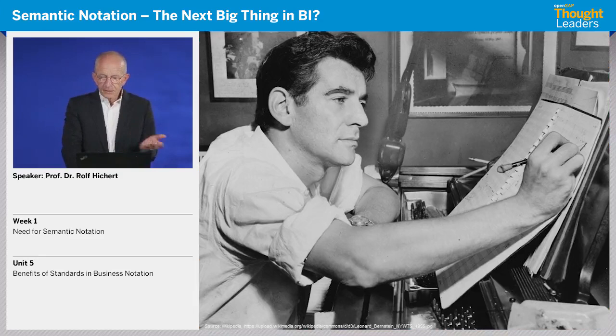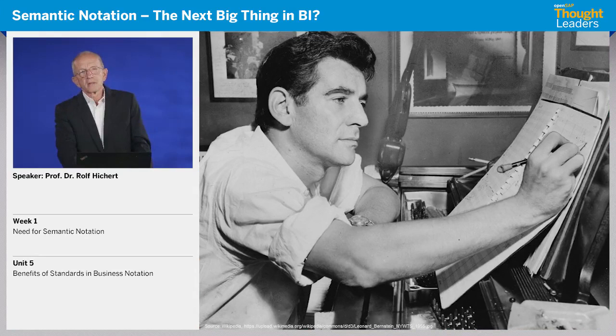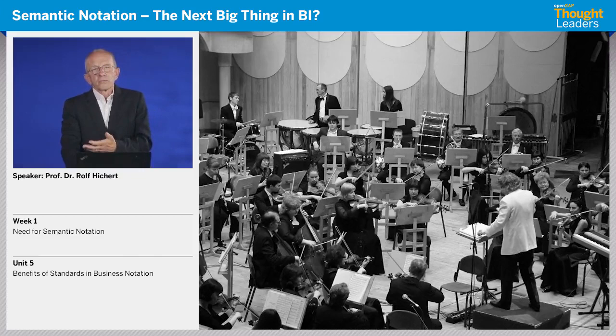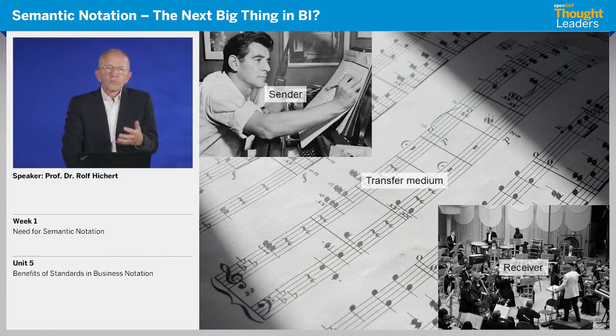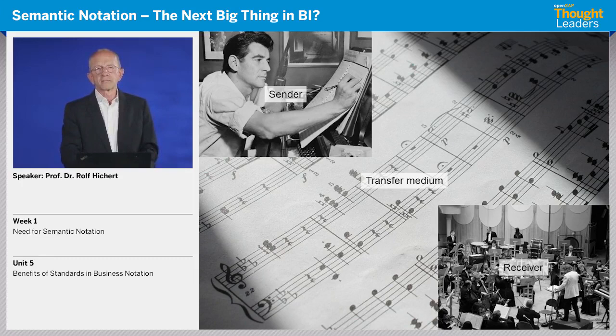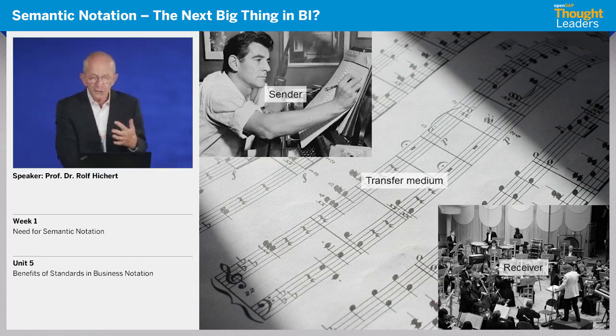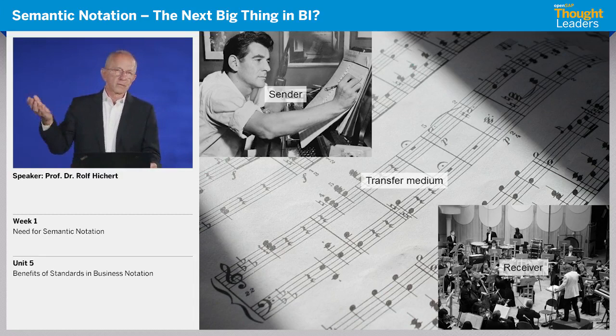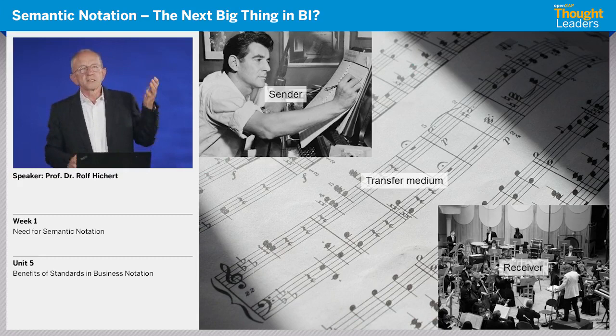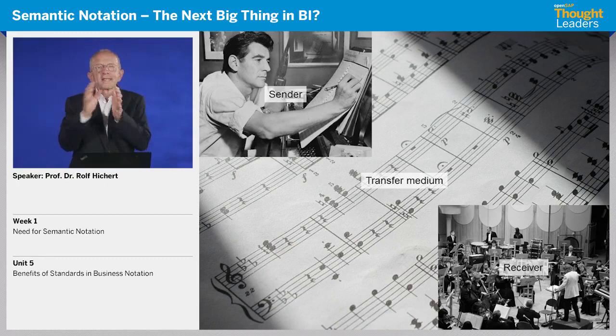Coming back to music — Leonard Bernstein, famous not only for his music in West Side Story. When you see him, what is he doing? He is writing the music; he is the sender. And what are the others doing? The orchestra is the receiver. And what is the communication tool in between — the link between sender and receiver? It is sheet music. That transfer medium is sheet music. And this is what we have to look for when we have the controller, the financial analyst, the writer of any report, and the reader, the audience, the receiver. Do we have this link in between, like sheet music?